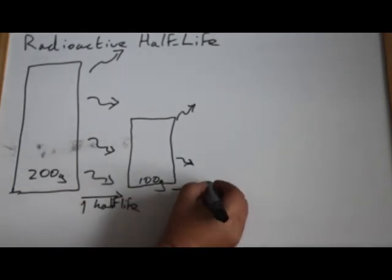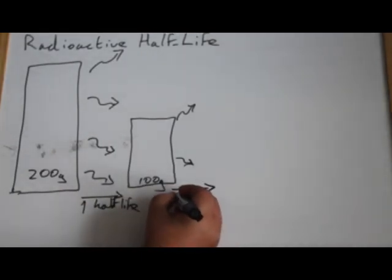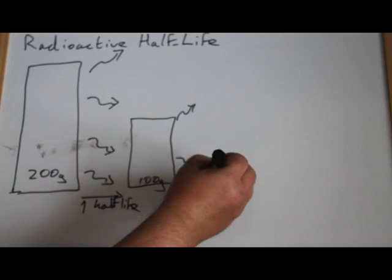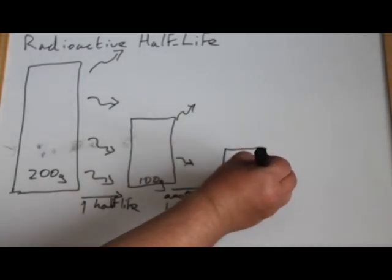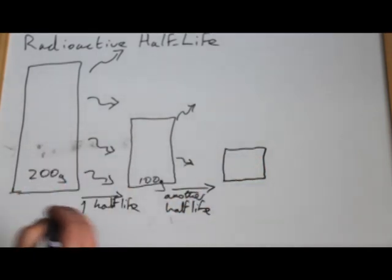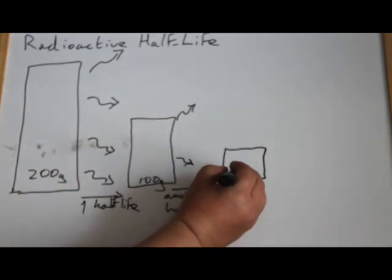If we wait another half-life, however—and this is what confuses a fair number of people, so watch out—another half-life. So now we've done two. Instead of all of it being gone, all that's happened is that we are now left with half of what we had before. So 50 grams,